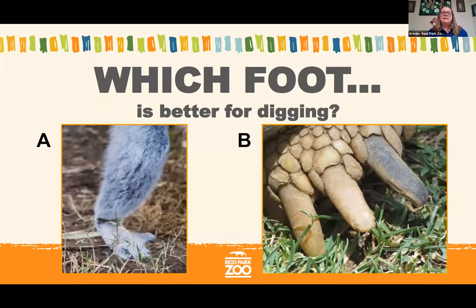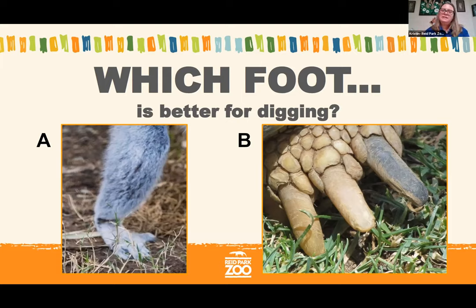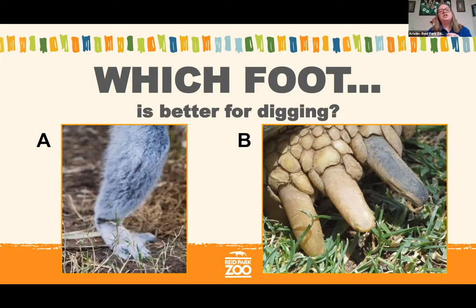Which foot do you think is better for digging — the lemur foot on the left, letter A, or the tortoise foot on the right, letter B? I'm seeing a mix of answers. The lemur has powerful legs and could probably dig a little bit, but like us, it'd be slow because it's using toes rather than claws. The tortoise foot on the right has very sharp claws, so it could probably dig a little faster. A lemur might dig on occasion too.